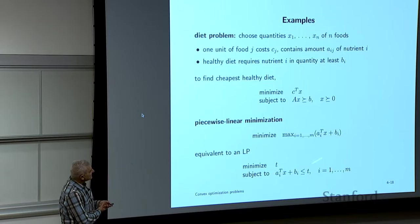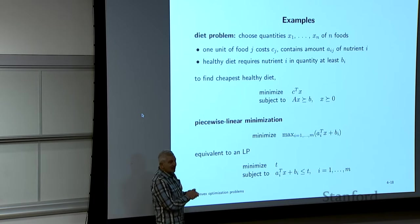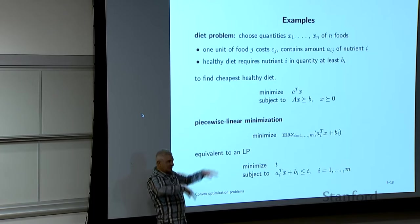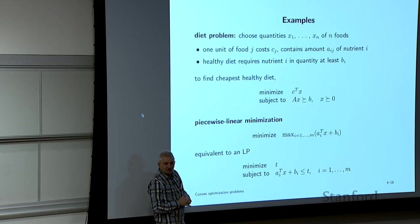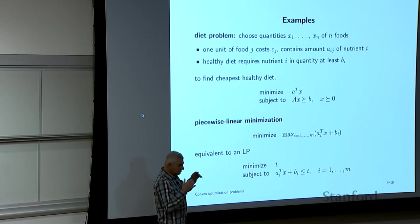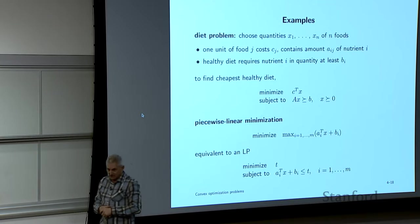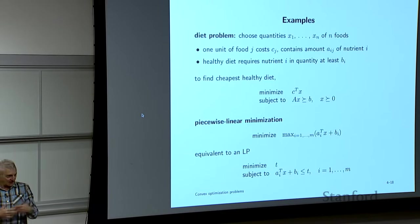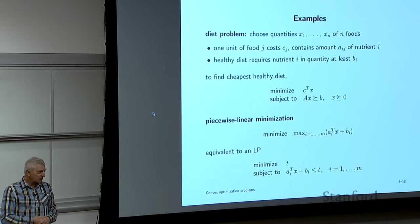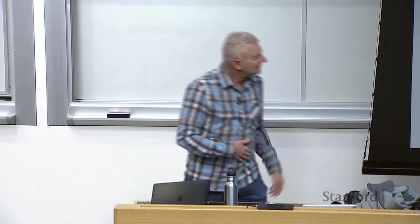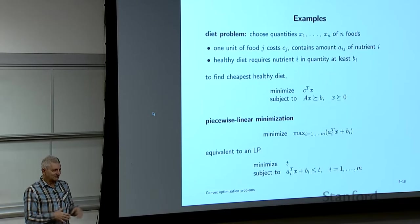Next: piecewise linear minimization. A piecewise linear function expressed as the maximum of a bunch of affine functions — each with a graph like a plane — and you want to minimize it. If asked whether that's an LP, you'd say no, because the objective is not affine when M > 1.